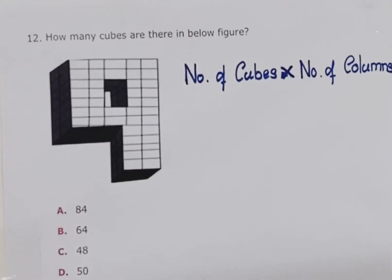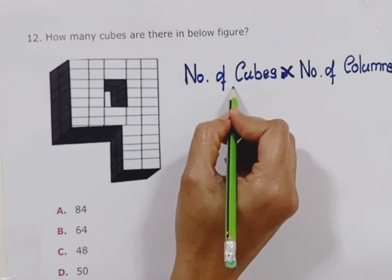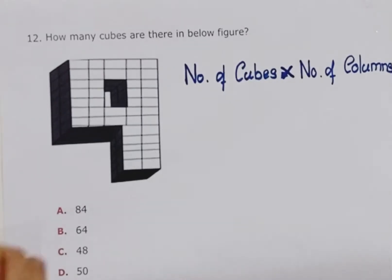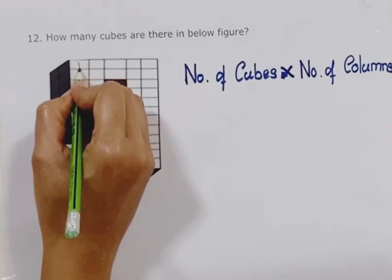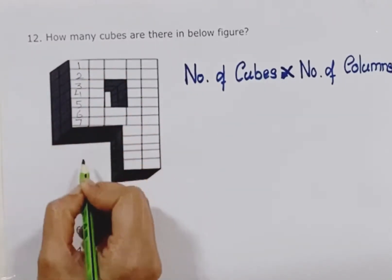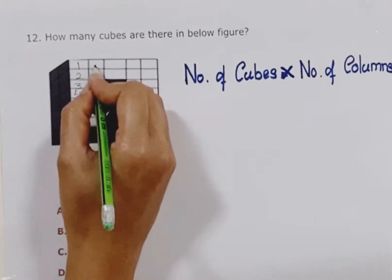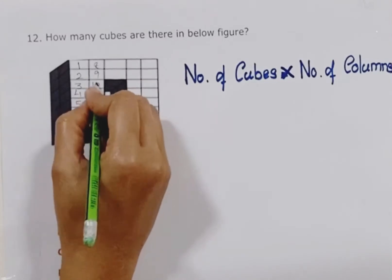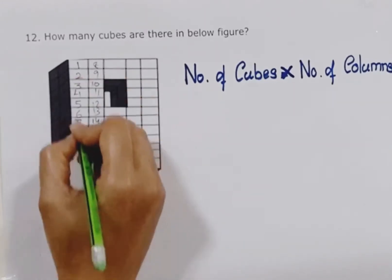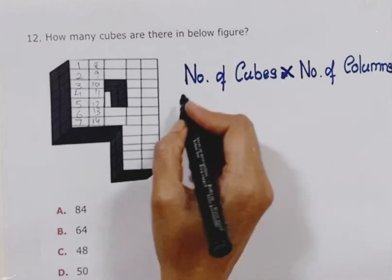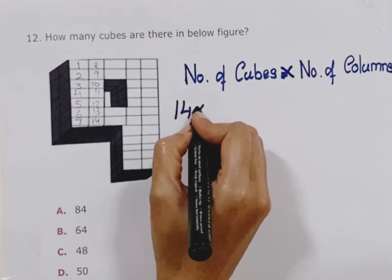To count the number of cubes in the given figure, first take the number of small cubes and multiply with its column. Counting here: 1, 2, 3, 4, 5, 6, 7, and same 7 here, so it will be 14. There are 14 small cubes in this section, and we multiply with its column.